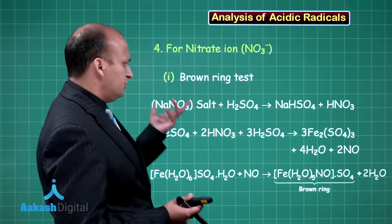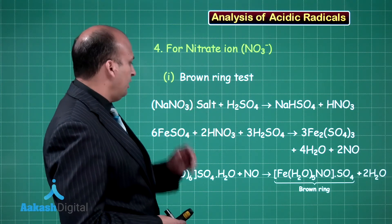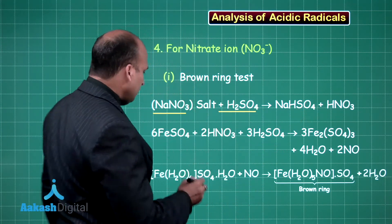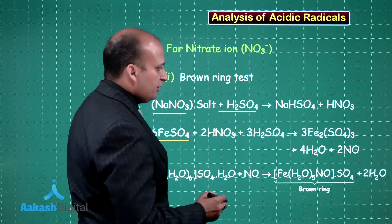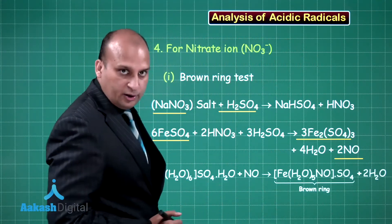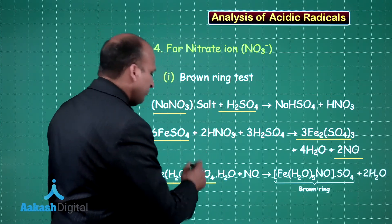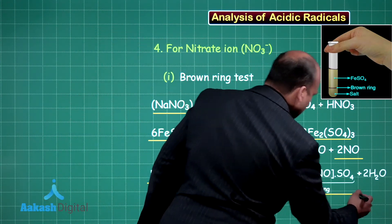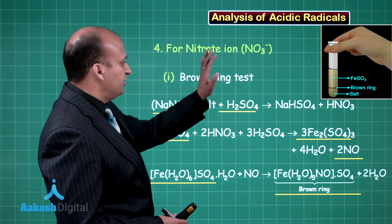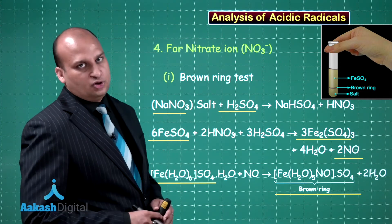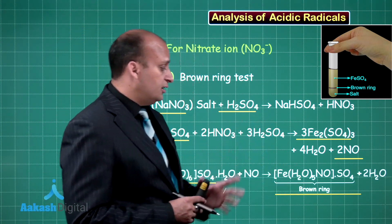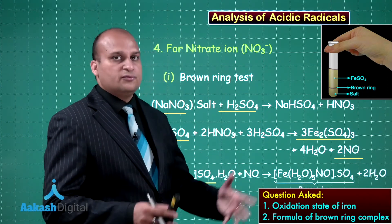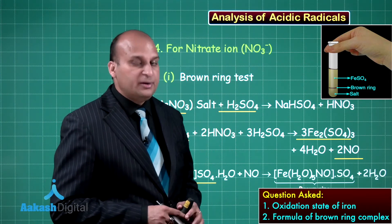For nitrate ion, the famous brown ring test: you take the salt, add H2SO4 to get HNO3, then add ferrous sulphate to get ferric sulphate plus NO. This NO combines in the test tube to give the brown ring complex, confirming the presence of nitrate ion. This is very important — questions have been asked about the oxidation state of iron in the brown ring complex, and about identifying the complex itself.